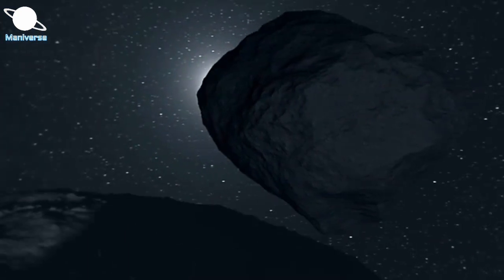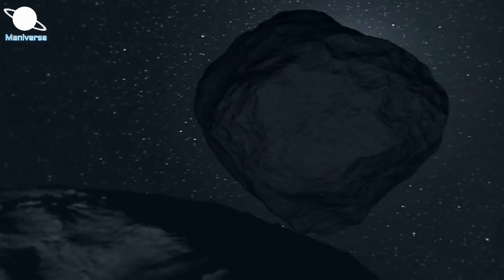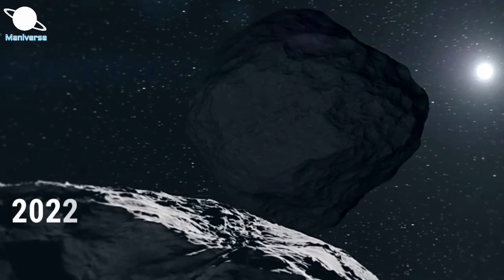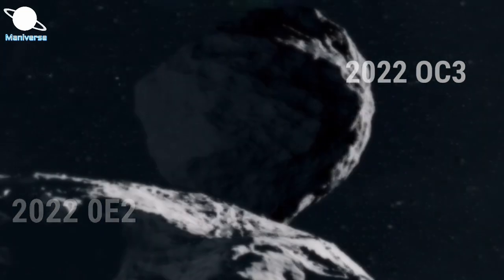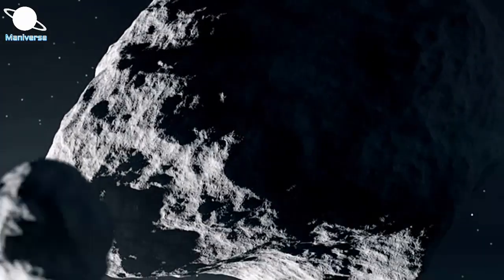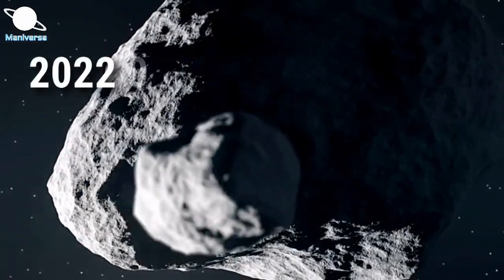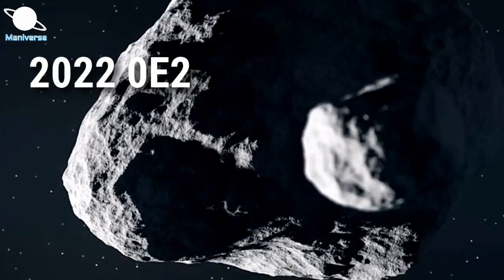One of them is huge in size. The names of these two asteroids are 2022 OE2 and 2022 OC3. First, we discuss the newfound huge space rock which is 2022 OE2.